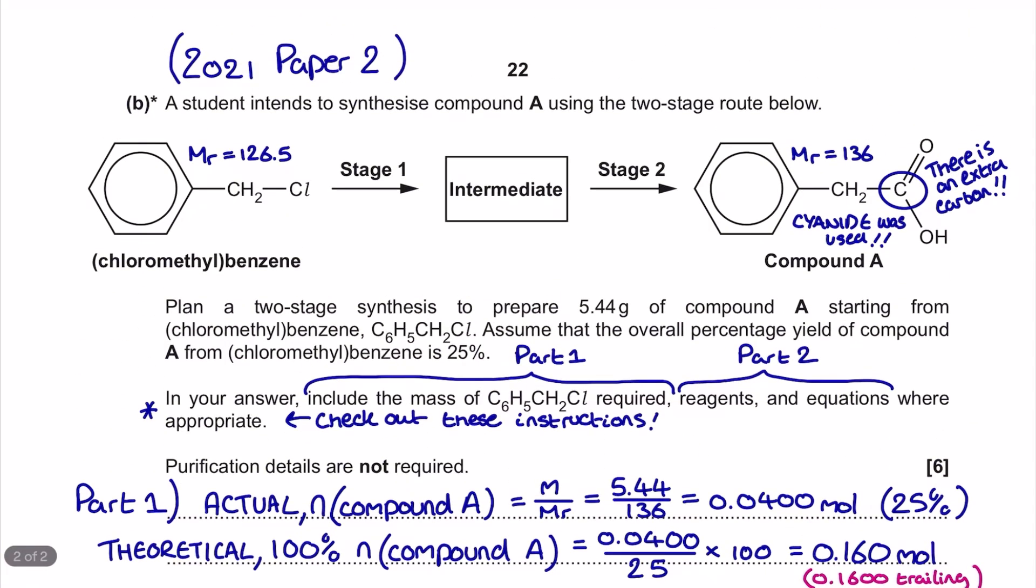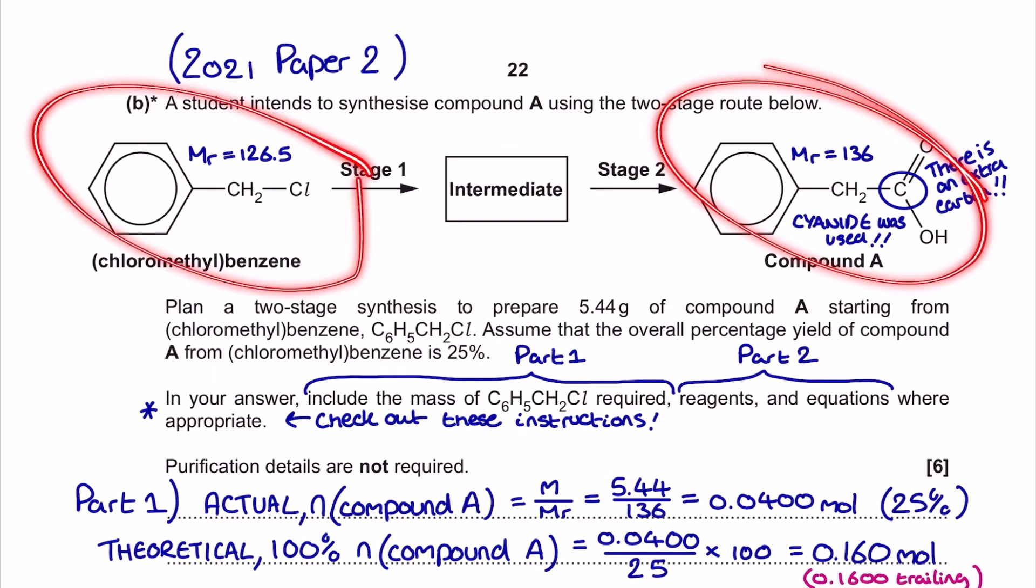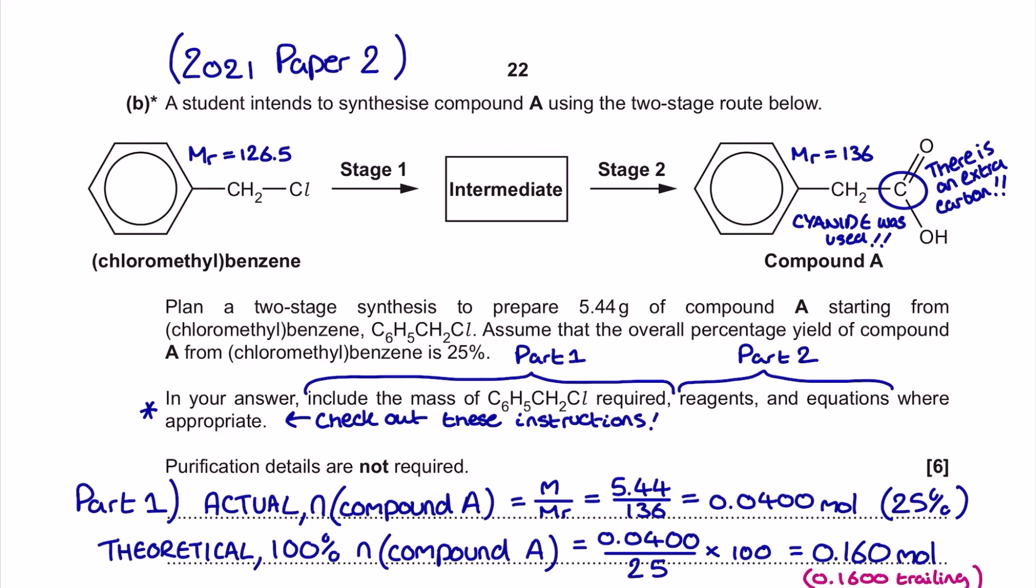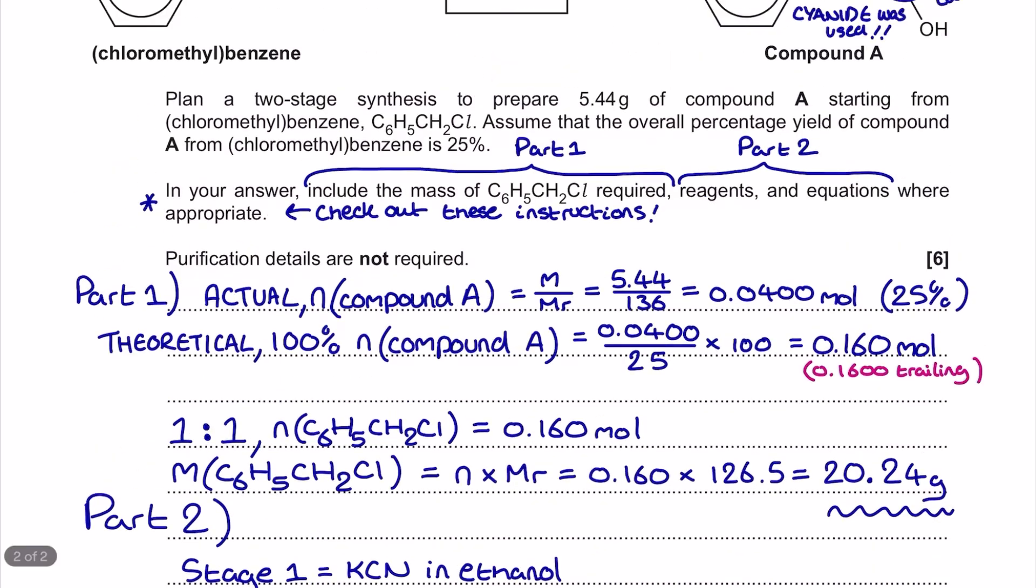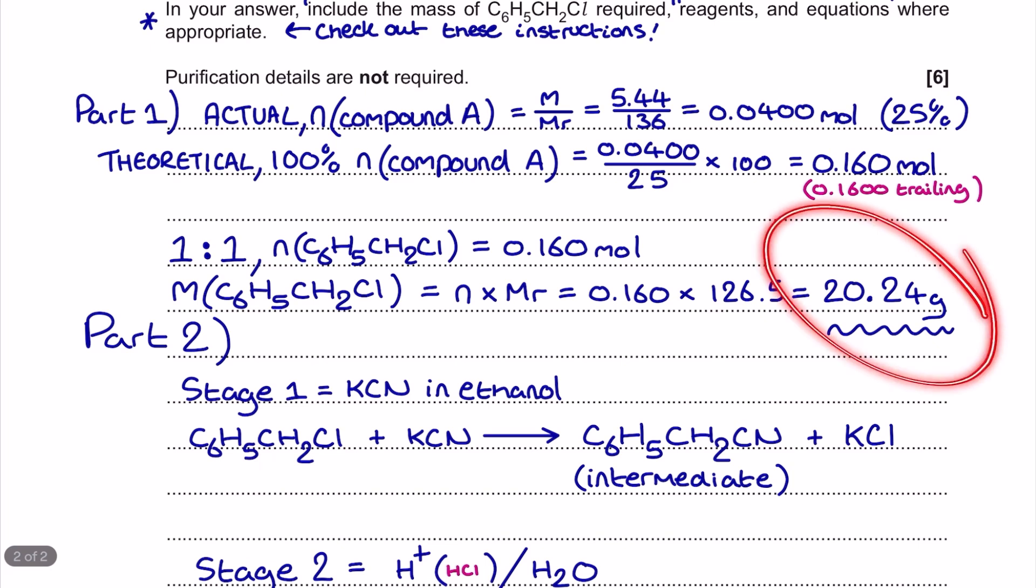Now if we look at the procedure across this two-step synthesis, the ratio here between the chloromethyl benzene and the compound A is one to one, so I can therefore suggest that the number of moles of the chloromethyl benzene I should start out with is going to be the same figure, the 0.160 mole. It's very easy then to transform this into a mass. I'm going to do the moles multiplied by the MR value, and this takes me back to the question to make sure I'm using the right one, that 126.5, and that means I'm going to get a mass value here of 20.24 grams. I always suggest mass values here to two decimal places for this particular style of exam question, especially when it's a level of response in a practical context.